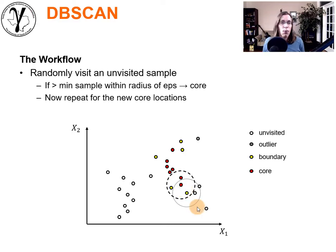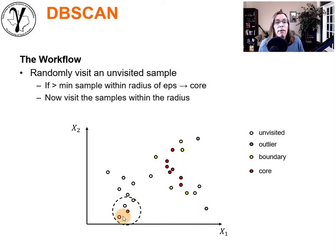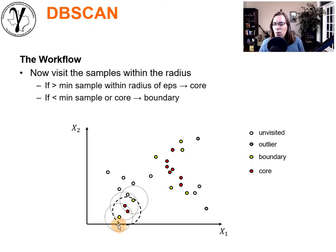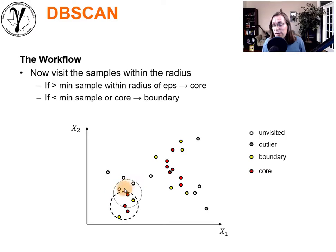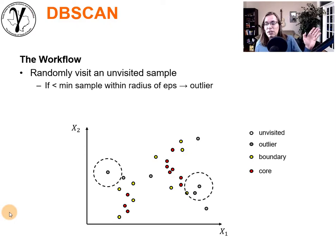We go pick another random location, count the number of points — one, it's an outlier. Another random location — we get four points, that's a core point. We start working around that core point, find more core and boundary points, and keep growing until we're done. We then visit more random locations and find more outliers. After finishing, we've categorized all our data: outliers, core points, and boundary points.